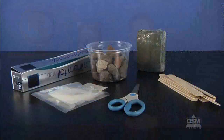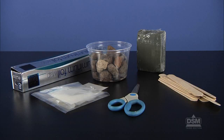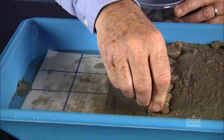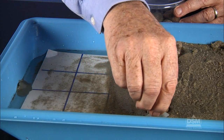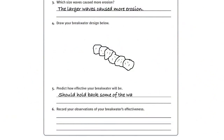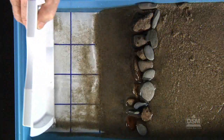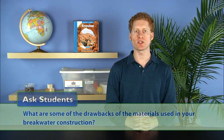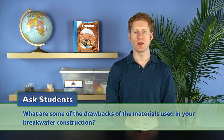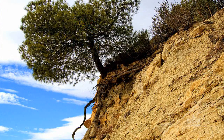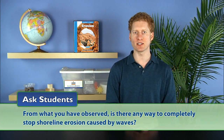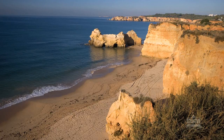Turn students' attention to the materials available at the distribution station: modeling clay, pebbles, wooden sticks, aluminum foil, and nylon mesh. Challenge them to design a breakwater using any of these materials. Have them predict the effectiveness of their breakwaters and record their predictions on Activity Sheet 10. Once they have finished building their breakwaters, instruct teams to perform the wave action experiment again and record their observations. After everyone has finished, have teams share their designs on the board and explain why they were or were not successful. Ask students what some of the drawbacks of the materials used in breakwater construction are. Accept answers such as wood rots, rocks and other earth materials erode, metal rusts, and nylon mesh can ensnare living organisms. Finally, ask students whether there is any way to completely stop shoreline erosion caused by waves. Students should realize that it is nearly impossible to completely stop shoreline erosion because the strength and magnitude of water is too great.